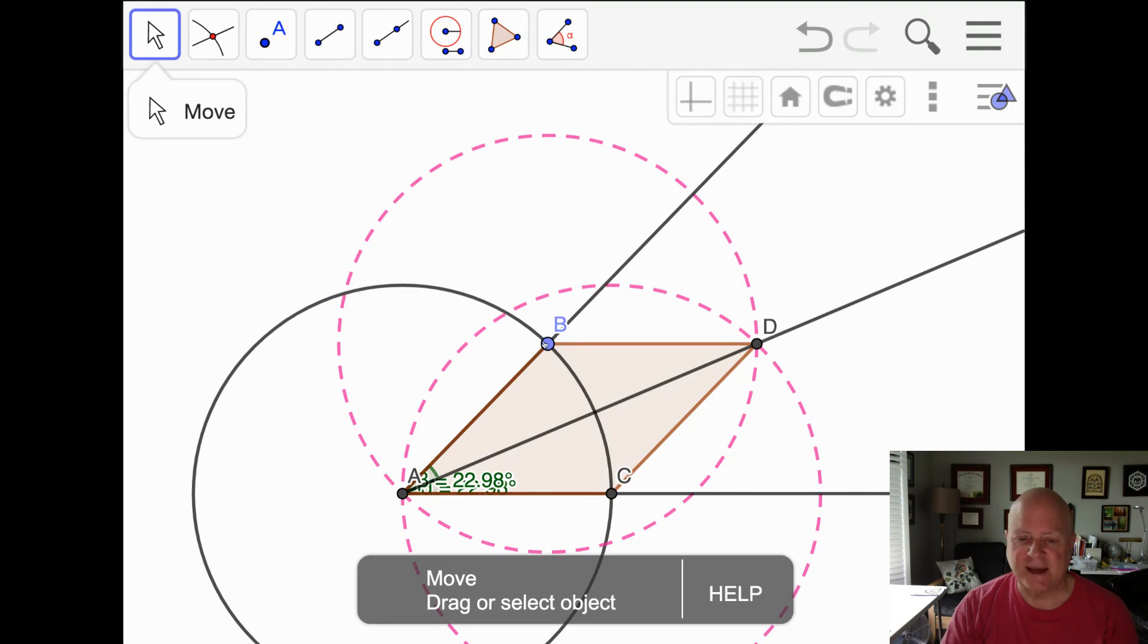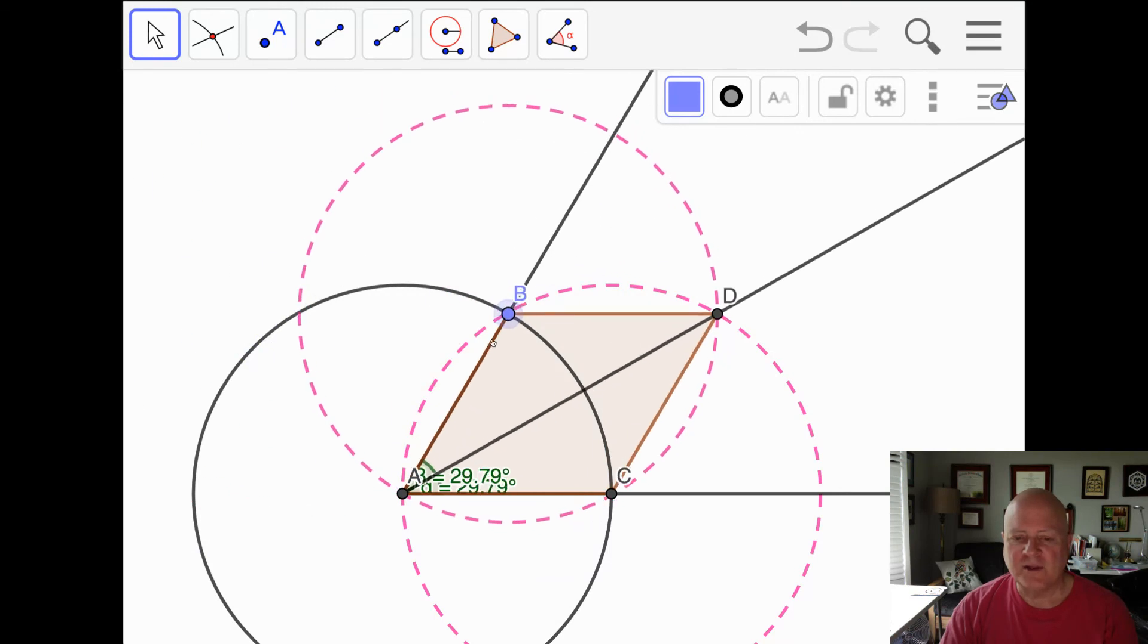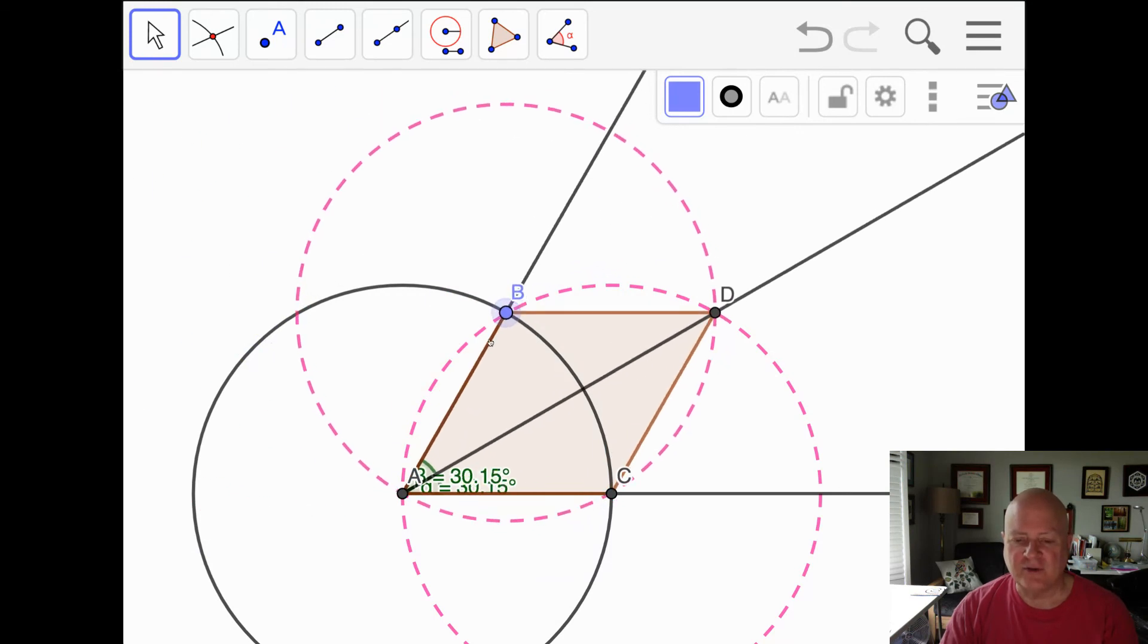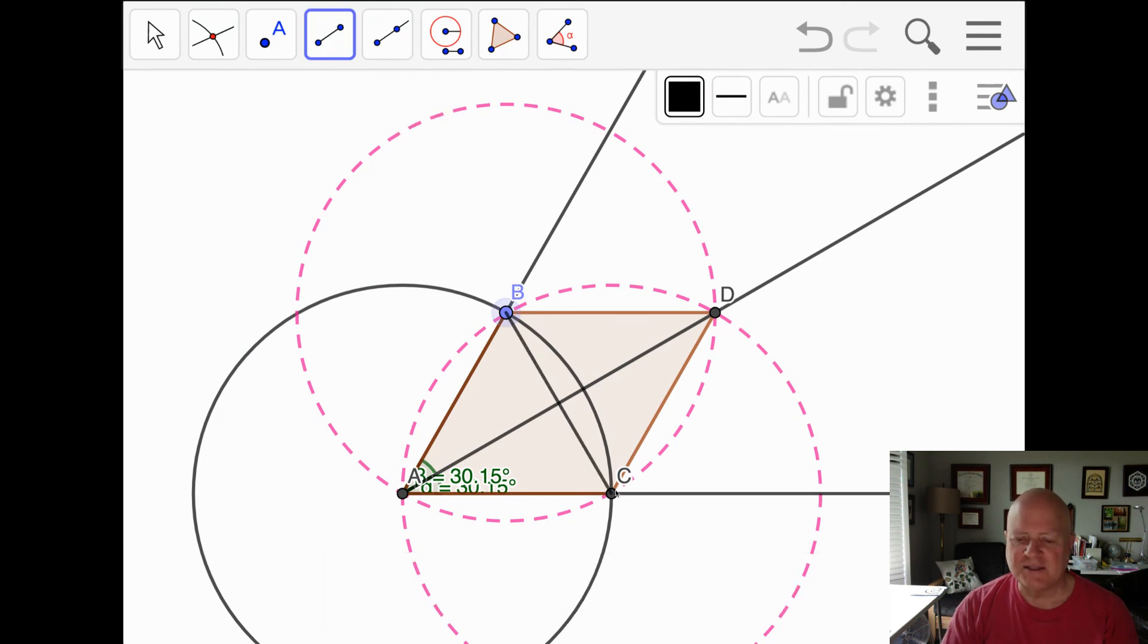And if I move this, because it's dynamic, I can move this around. Now, when we did this before, we had like 30 degrees here. Originally, when we bisected a segment using two circles that were the same, we ended up with a rhombus, and we ended up with this line that is perpendicular to my original segment.